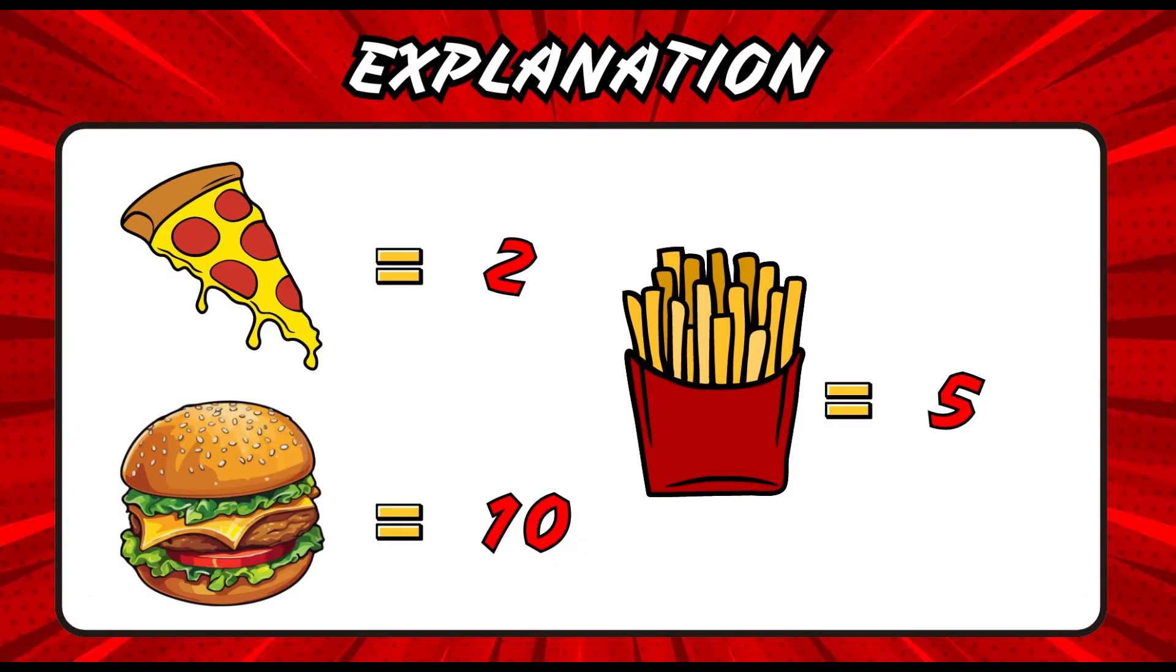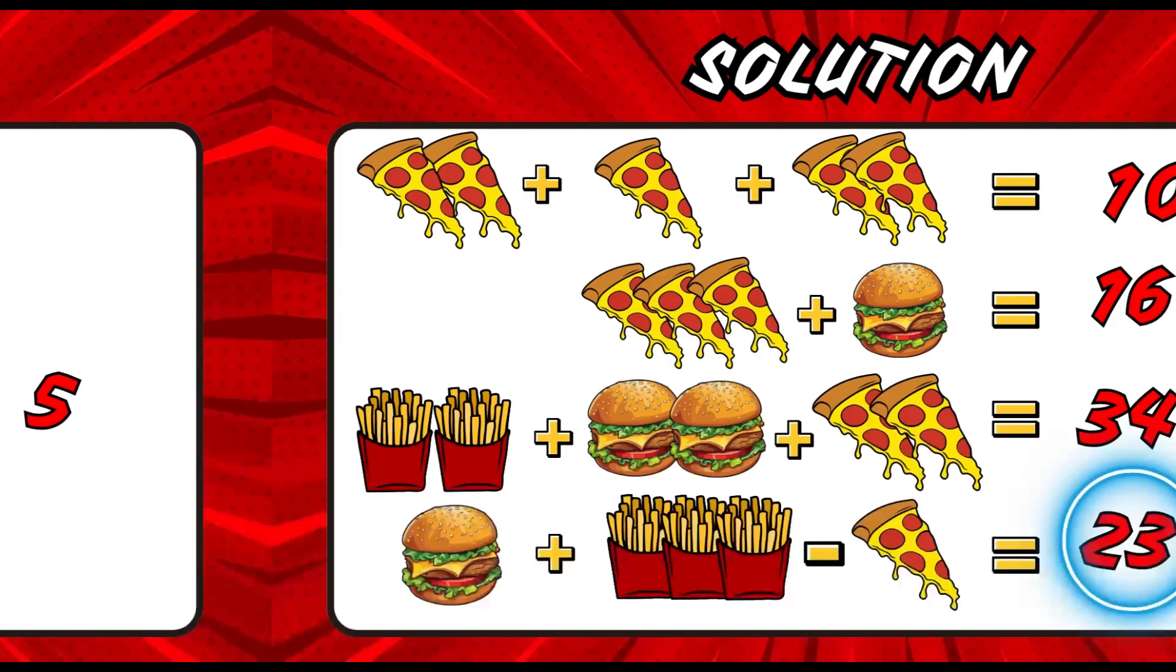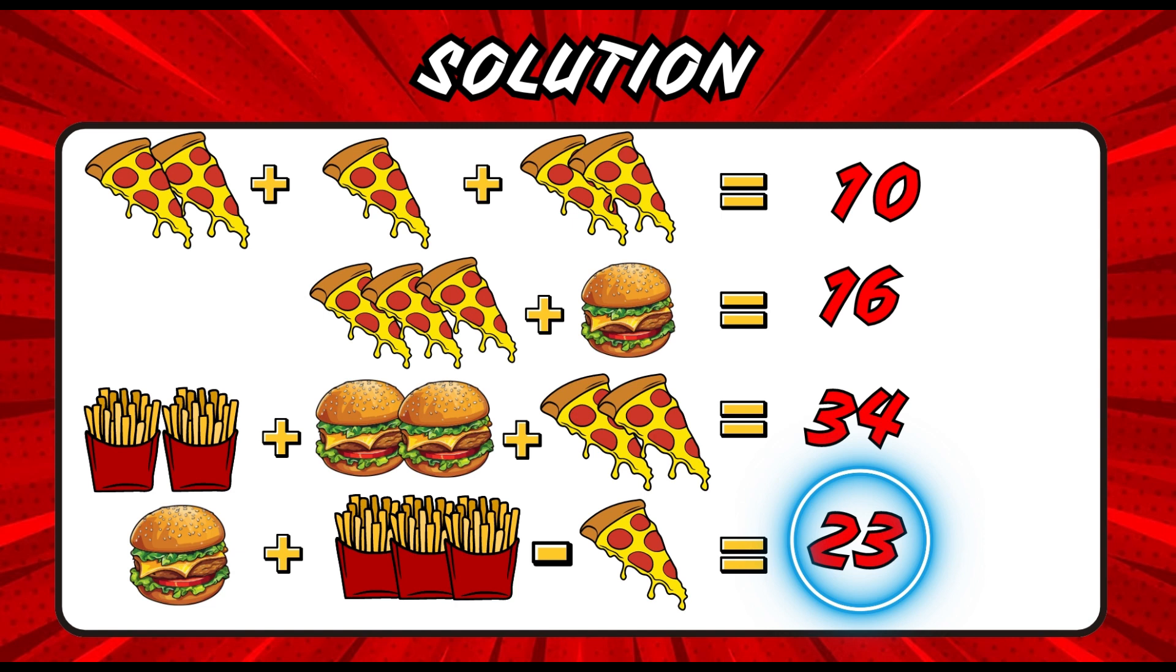Let's check the values of each item. The burger holds up a value of 10, the fries have a value of 5, and for the pizza, it's 2. Now substitute the values and complete the equation. The right equation is 10 plus 15 minus 2 equals 23. If you guessed 23, that's the right answer.